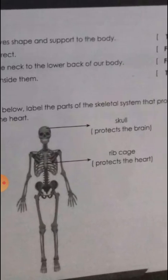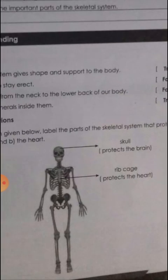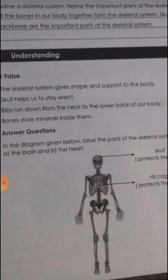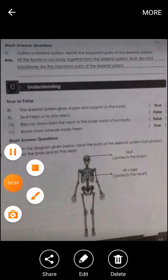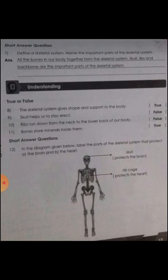Now you can see this picture, children. It shows the parts of our body — a skeletal system. What organs are we protecting with the help of the skull and ribcage? Draw the skeletal system and label the important parts. The skull protects the brain, and the ribcage protects our heart.